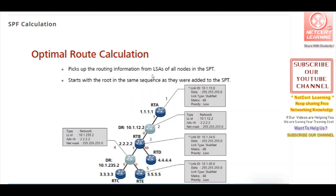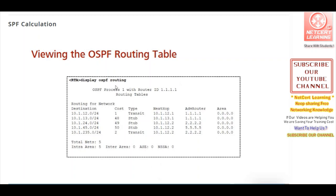In Phase 2 of SPF, routing information is gathered from LSAs of all nodes in the shortest path tree, starting with the root and following the sequence in which nodes were added. This produces the final optimized routing table. Running 'display routing table' from Router A's perspective shows the completed shortest path first result.